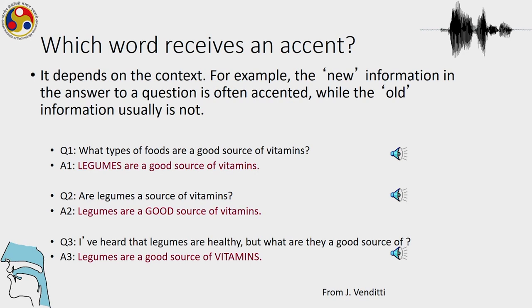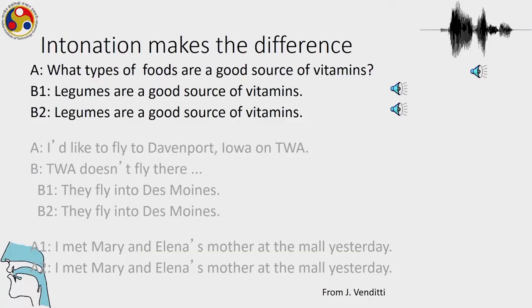'I've heard that legumes are healthy, but what are they a good source of?' — then the new information is 'vitamins.' So in each of these sentences, 'legumes,' 'good,' and 'vitamins' respectively represent the new information. This tells us that accent placement is context-dependent — depending on what information is being asked for, the position of the accent may differ.